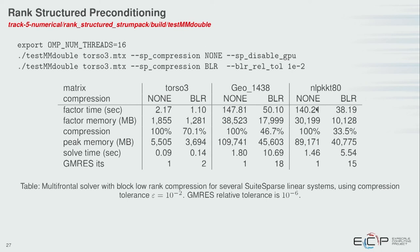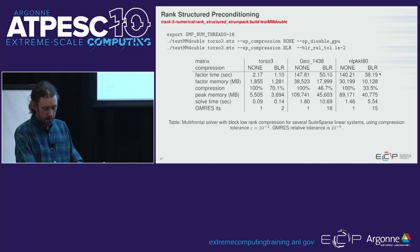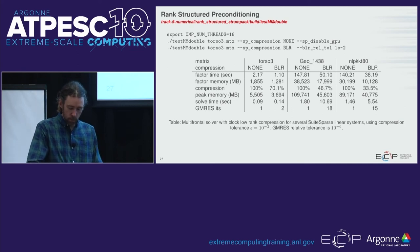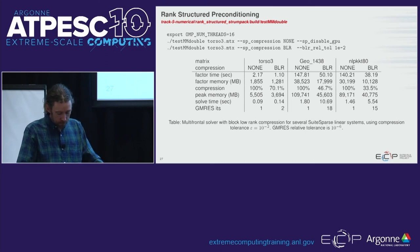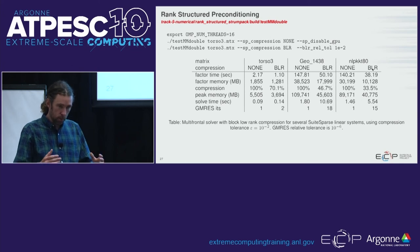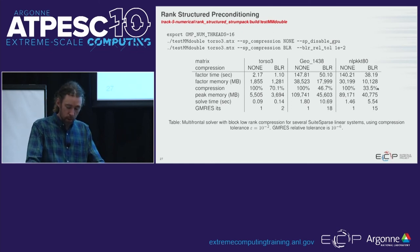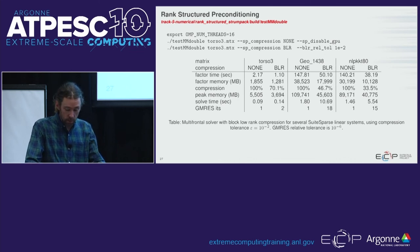Looking at SuiteSparse matrices — torso, geo, and nlp_kkt — comparing no compression versus block-low-rank compression in the sparse factors, we see compression down to about 33% of the original exact sparse factors and nice speedups. Note that the exact solver on GPU is faster than the CPU block-low-rank sparse direct solver, but these two optimizations are orthogonal — ideally we would combine both. This speed-up is asymptotic, so at large enough scale the compressed approach will outperform the GPU code.